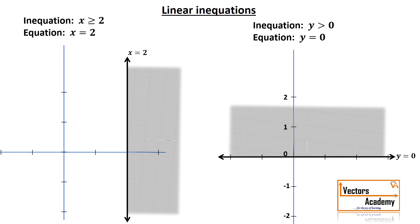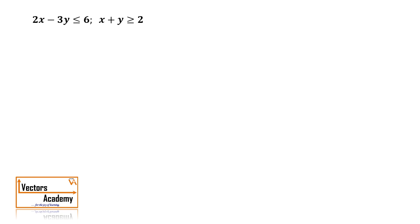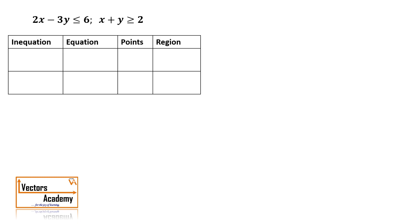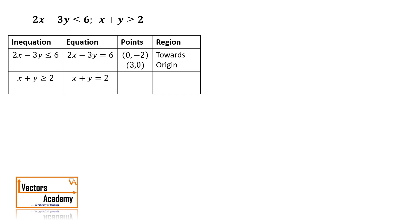Now we will take some more complex questions involving two inequations plotted on the same graph. For questions with more than one inequation, we make a table with four columns: inequation, equation, points, and region. The first inequation is 2x - 3y ≤ 6. Substituting x = 0 gives y = -2, and y = 0 gives x = 3. The less than sign means the region is towards the origin. The second inequation is x + y ≥ 2. Substituting gives points (0, 2) and (2, 0). The greater than sign means the region is away from the origin.